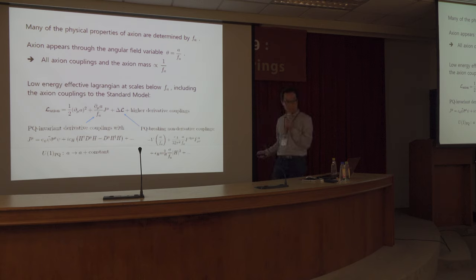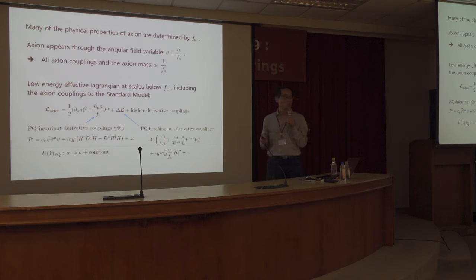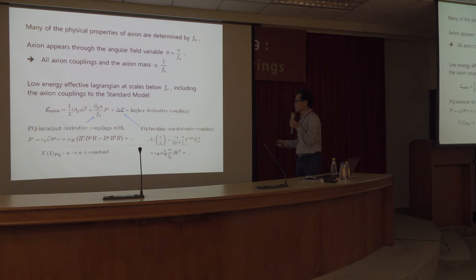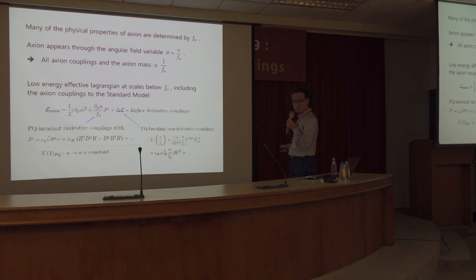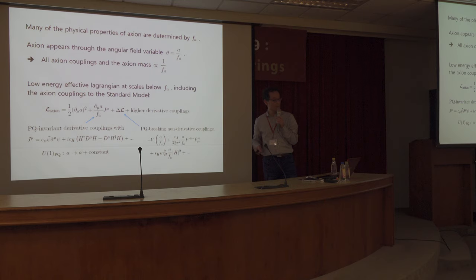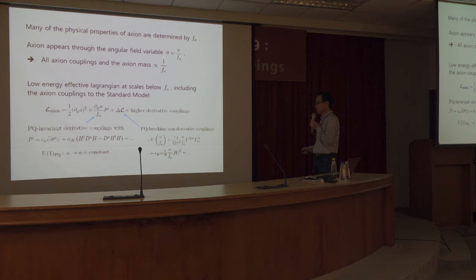These couplings are invariant under the U(1)_PQ symmetry, which is identified as just a constant shift of the axion field. But of course, since this shift symmetry is not an exact symmetry, you can have extra interactions that violate this shift symmetry. You can have PQ-breaking non-derivative couplings of axions — for instance, a simple potential including the mass, and also axion coupling to gauge bosons, which violates the shift symmetry.